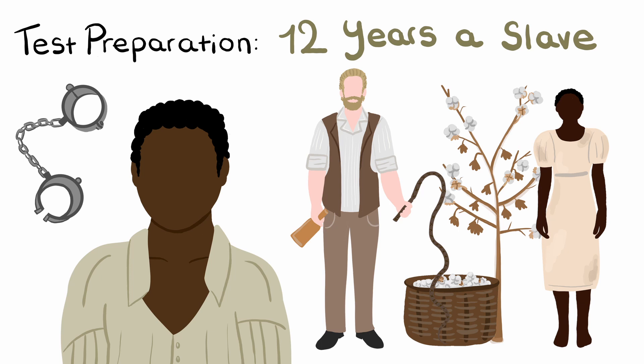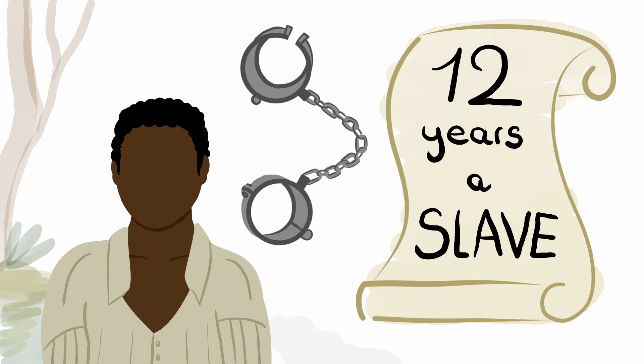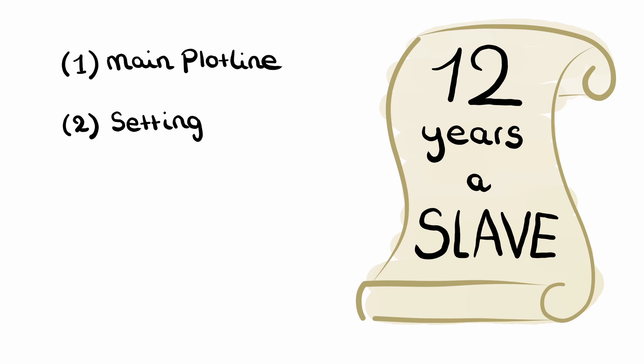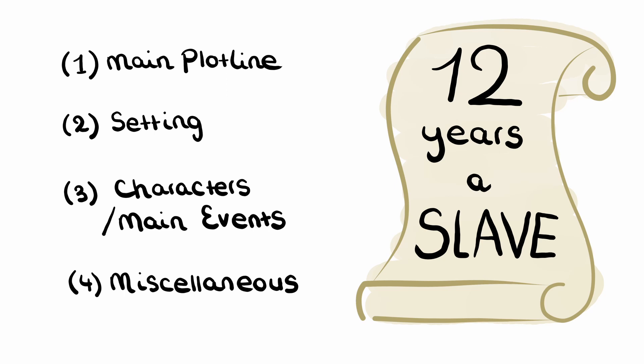This video will cover the main plotline, setting, characters and most important events in the book 12 Years a Slave by Solomon Northup, a novel which tells the true story of a free man who was tricked and sold into slavery. The information in this video is split into four sections: the main plotline, setting, characters and main events, and some miscellaneous details that might be relevant for any literature exams you are preparing for.